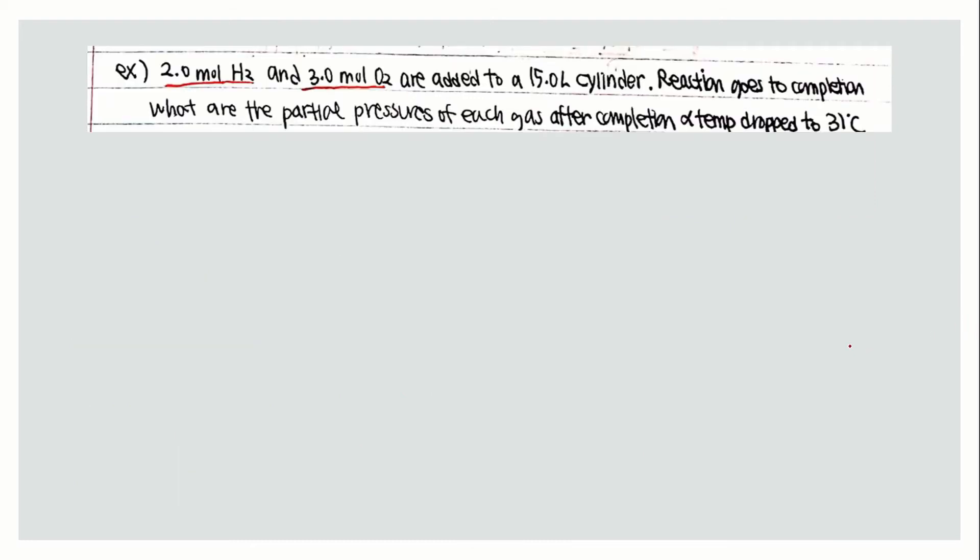Another example: 2.0 mol H2 and 3.0 mol O2 are added to a 15.0 liter cylinder. Reaction goes to completion. What are the partial pressures of each gas after completion when temperature drops to 31 degrees Celsius?